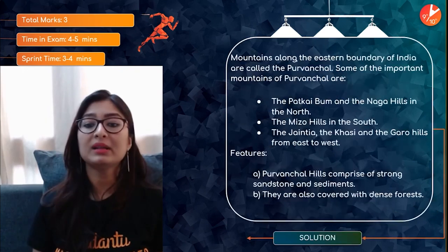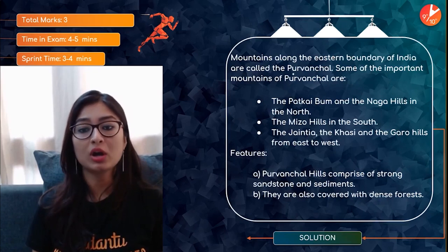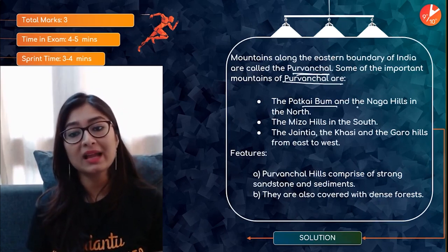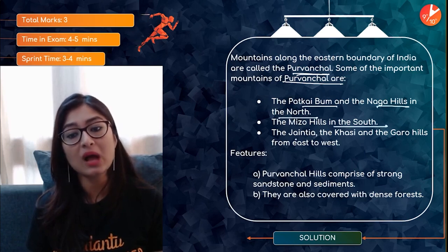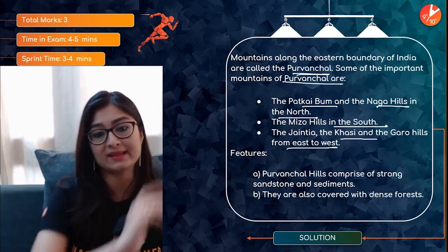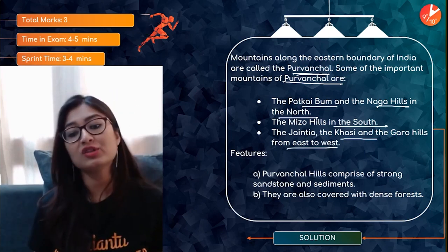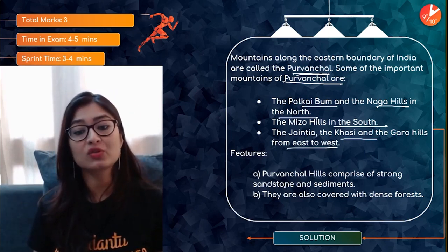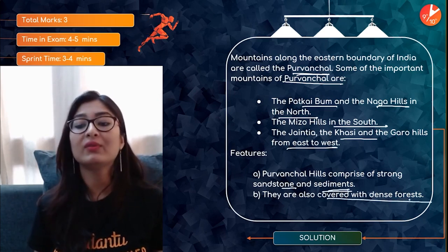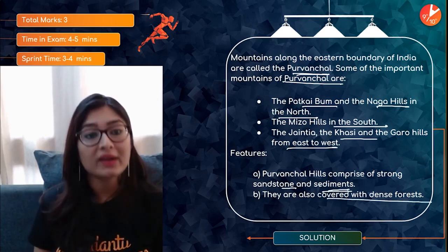Mountains along the eastern boundary of India are called Purwanchal — 'Purwa' meaning east in Hindi. Some of the important hills are the Jaintia, Khasi, and Garo hills from east to west. The Purwanchal hills comprise strong sandstone and sediments and are covered with dense forests.